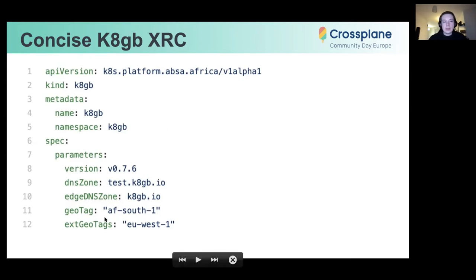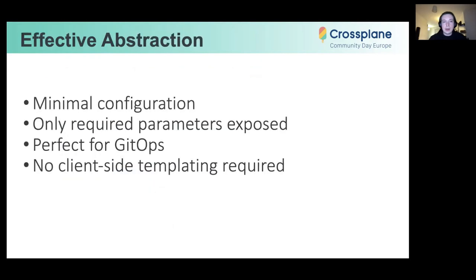So it provides a very effective abstraction, very minimal configuration. Only required params are getting exposed and you decide what kind of these params are with the help of Crossplane abstraction power. This setup is very good for GitOps.